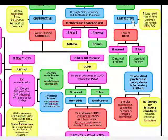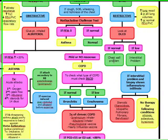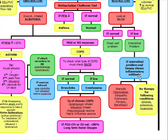Once we've diagnosed restrictive lung disease, we evaluate the DLCO. If the DLCO is normal, it's a chest wall problem such as kyphosis or obesity. If the DLCO is low, the patient has an interstitial problem. If biopsy shows an inflammatory infiltrate, steroids are given in sarcoidosis, idiopathic pulmonary fibrosis, and berylliosis. Steroids are not proven effective and should not be given in silicosis, asbestosis, and byssinosis.